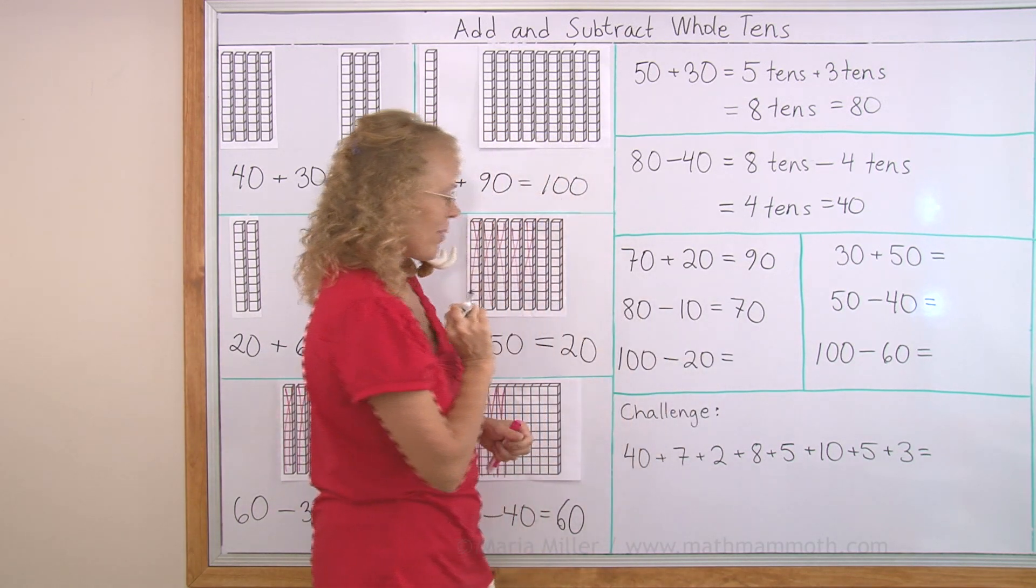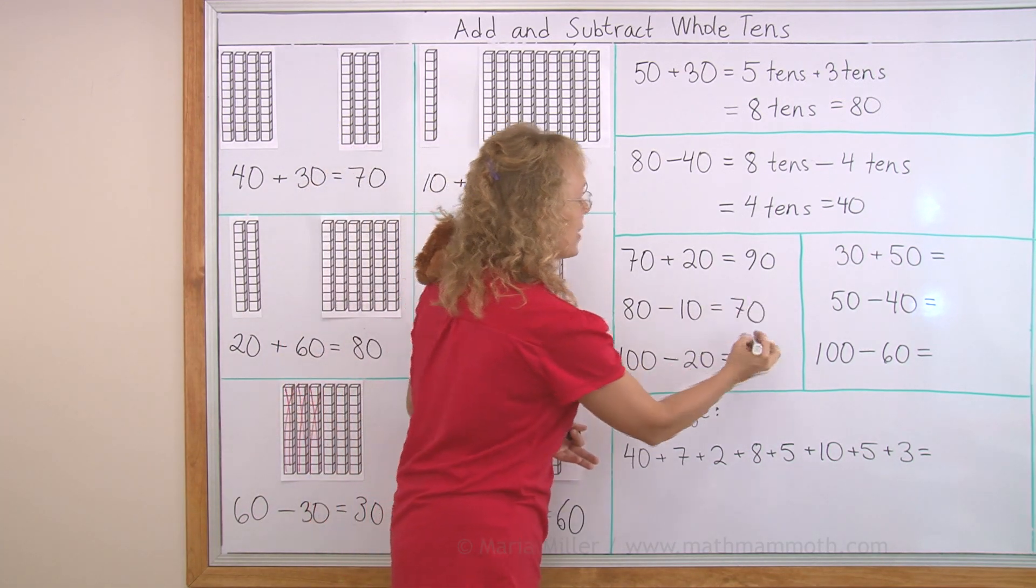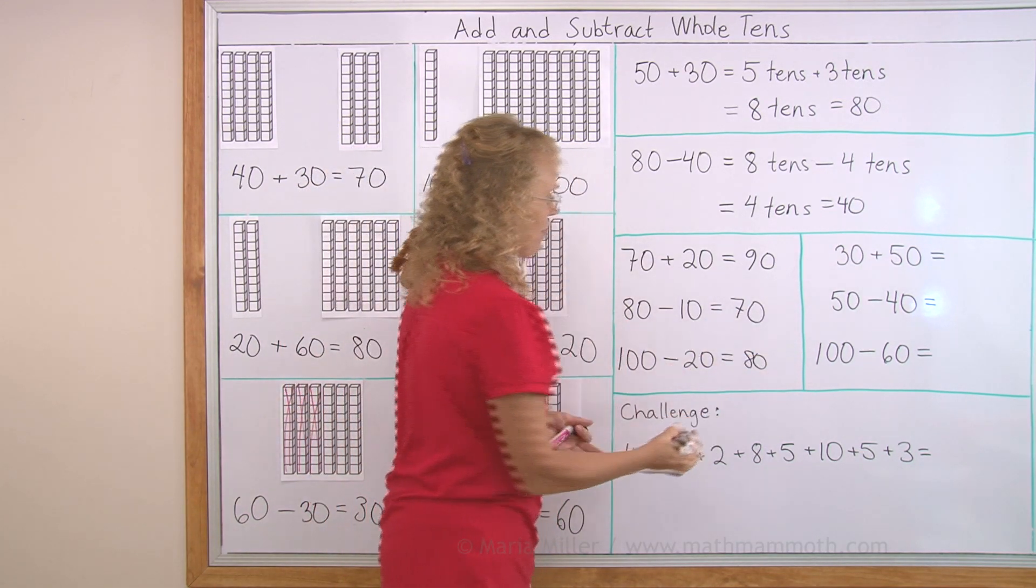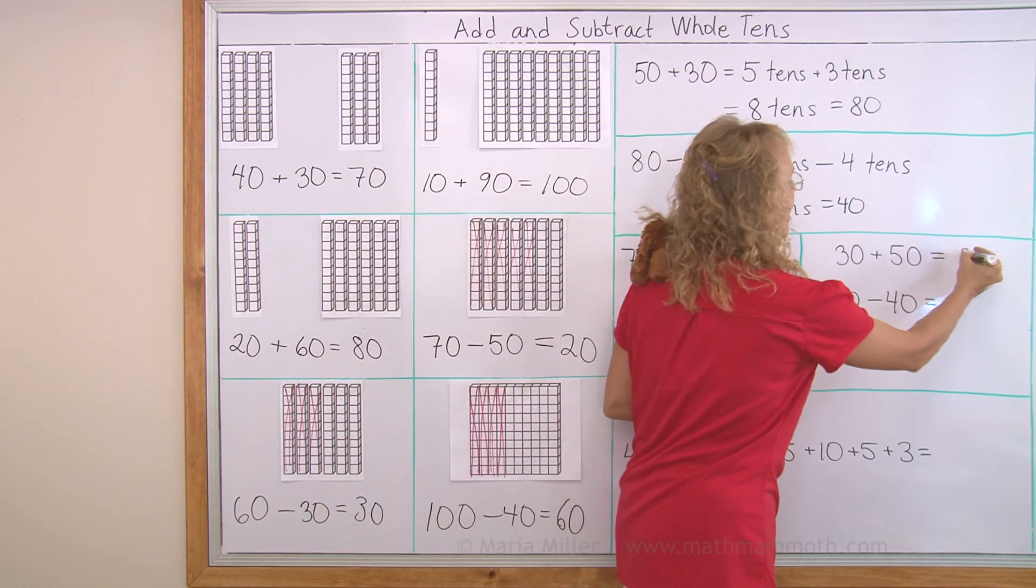Hundred minus twenty. Hundred is ten tens. So ten tens take away two tens is eight tens. Eighty. Thirty plus fifty. Remember three plus five. The answer is eighty.